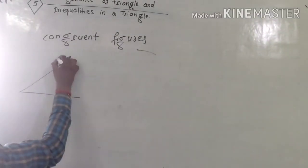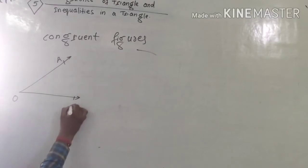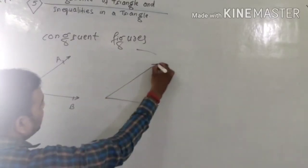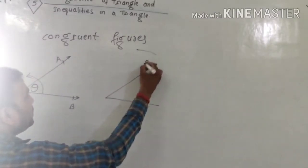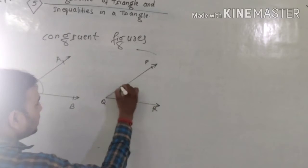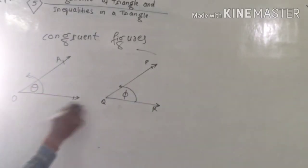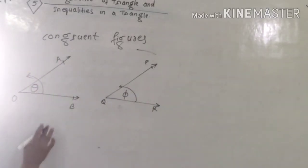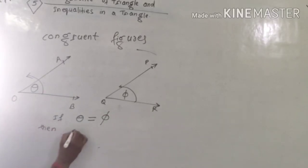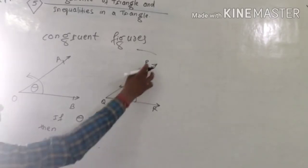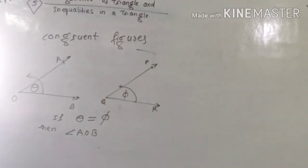For example, if ray AO and ray OB make an angle AOB equal to theta, and angle PQR equals phi, and if their measurements are equal — that is, angle theta equals phi — then angle AOB and angle PQR are congruent angles.